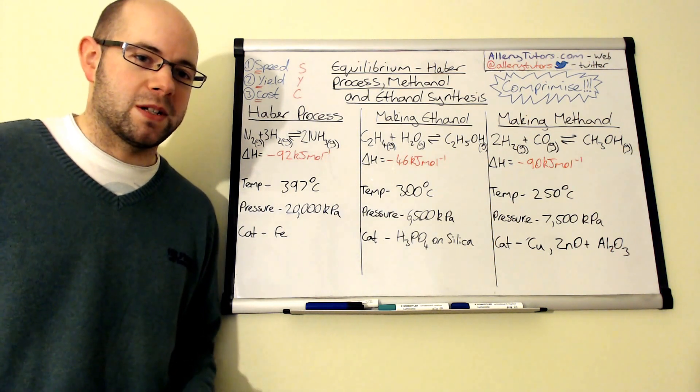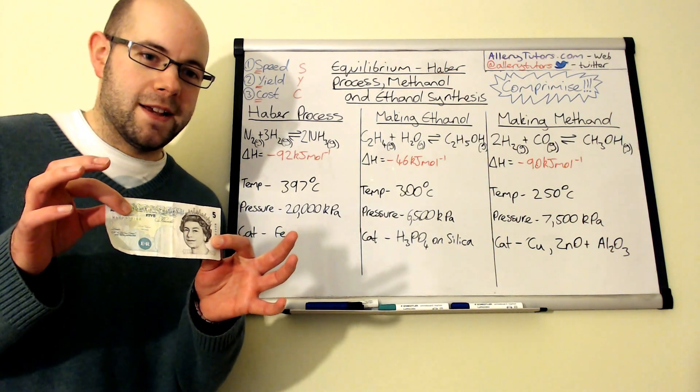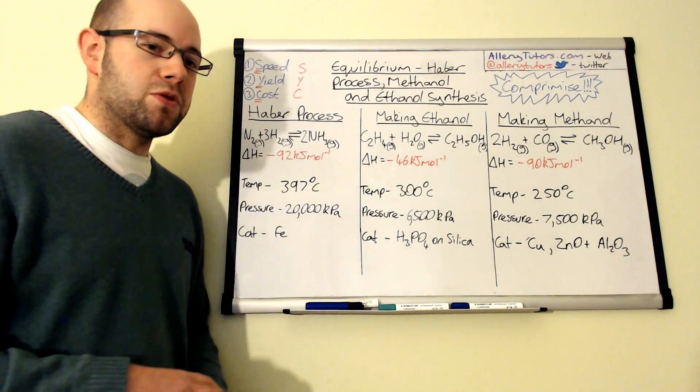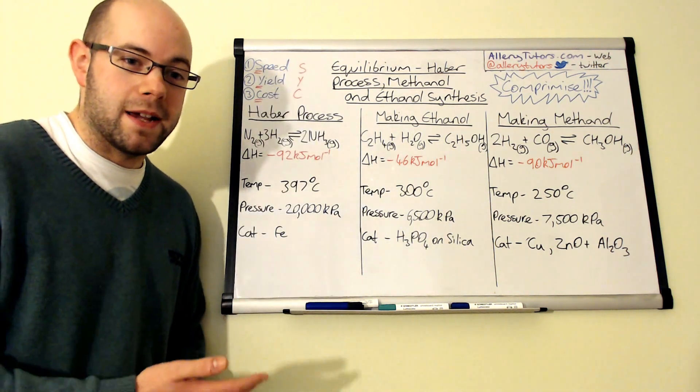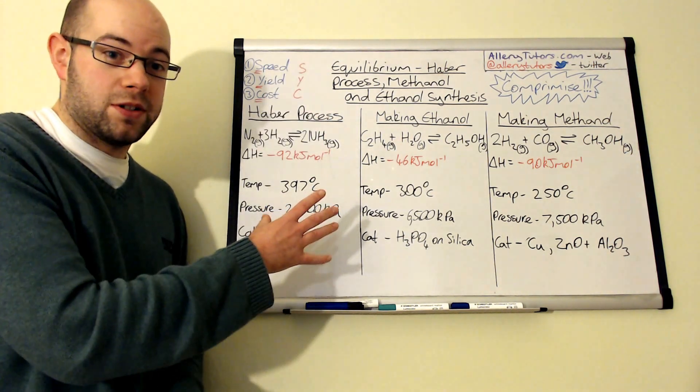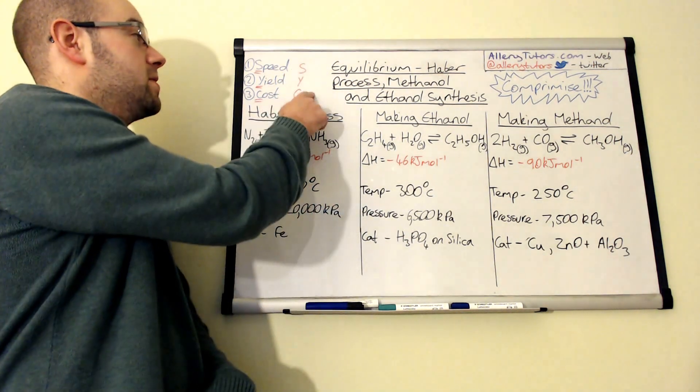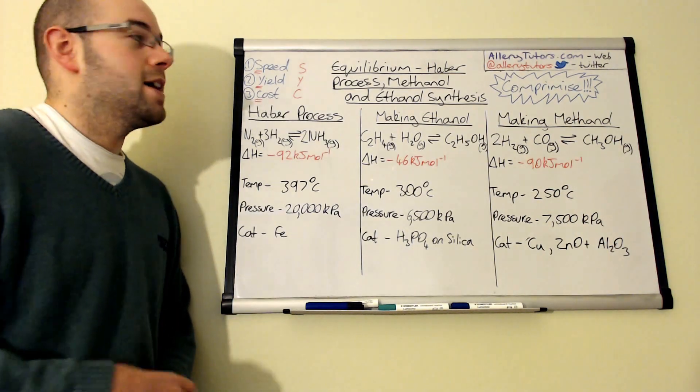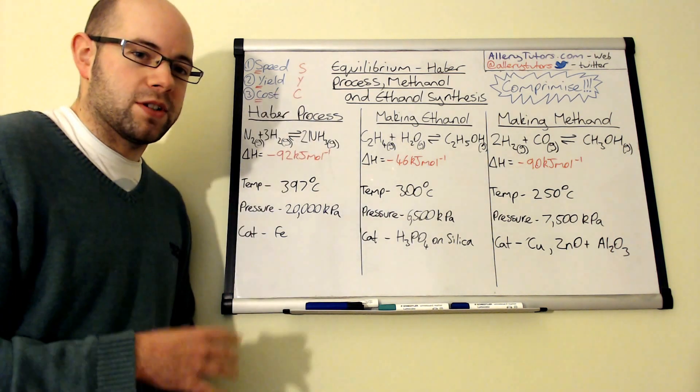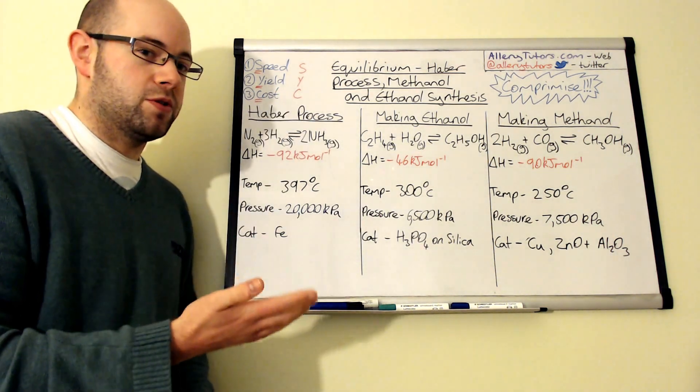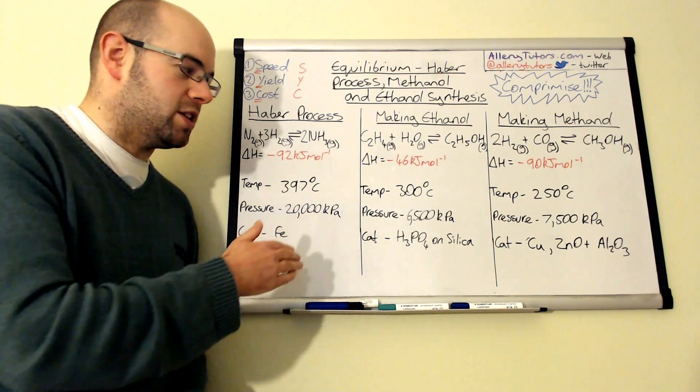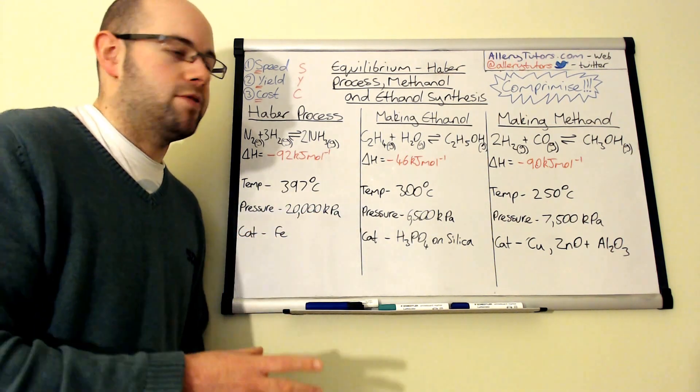Now in business the whole point is to make money, and in the chemical industry money is derived from the product that you make, how much you make, and how quick you make it. So when we do these reactions we're going to refer back to this acronym which is PSYCH: the speed, how quick the products can be made, and the yield, which is how much, and the cost, how much does it cost to make this product.